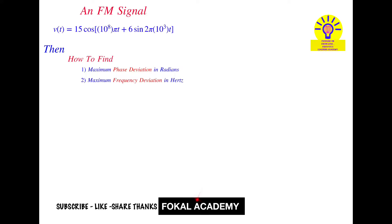Hi everyone, welcome to Focal Academy. In this problem, an FM signal is given: v(t) = 50 cos(10^8 × 5t + 6 sin(2π × 10³ t)).